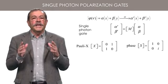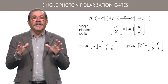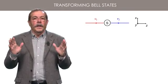Using these gates on one or both photons of an entangled pair allows one to transform one Bell state into another Bell state. This is the key to the production of any of the Bell states.